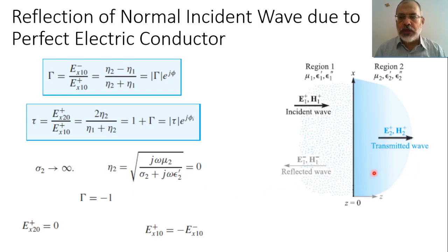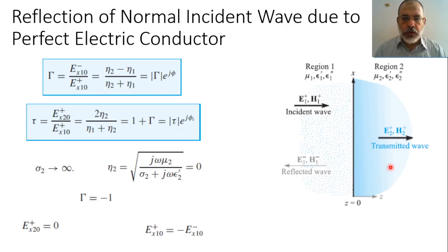It means there is no transmitted field inside the perfect electric conductor. For the perfect electric conductor, the reflection coefficient gamma equals minus 1 and the transmission coefficient equals 0. The transmitted electric field EX2(0+) would be 0 because it is tau multiplied by the incident field.